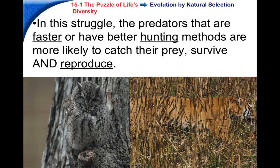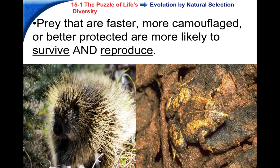In the struggle, predators that are the fastest, better hunters, or have longer claws or teeth are most likely to catch prey, get food, survive, and — most importantly — reproduce. The ones that reproduce most successfully pass on their genes to the next generation most often. On the flip side, prey that are the fastest, most camouflaged, or most protected are most likely to survive and reproduce. The ones with the best characteristics are most likely to survive and reproduce.